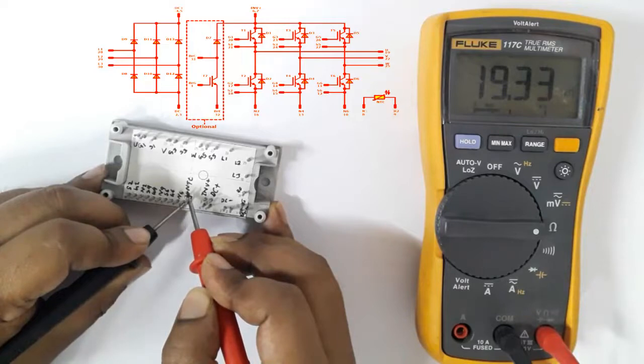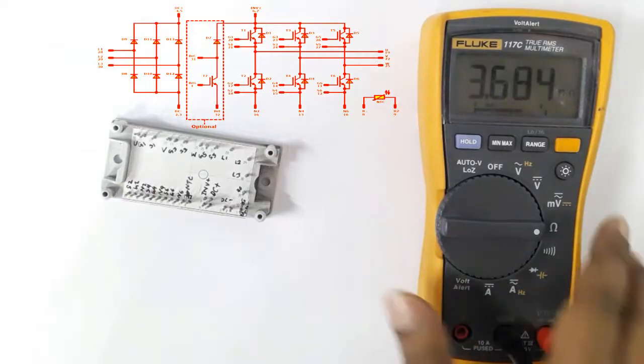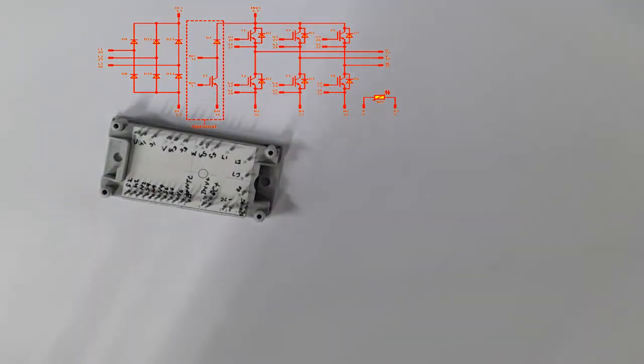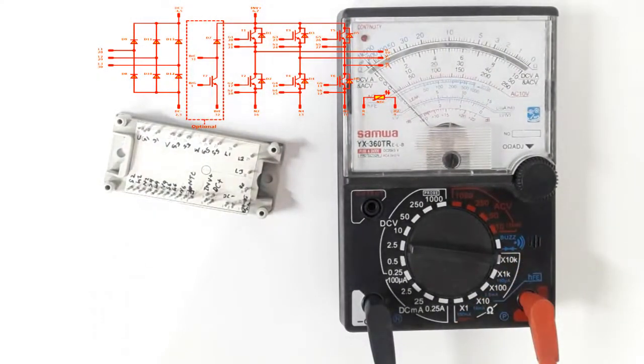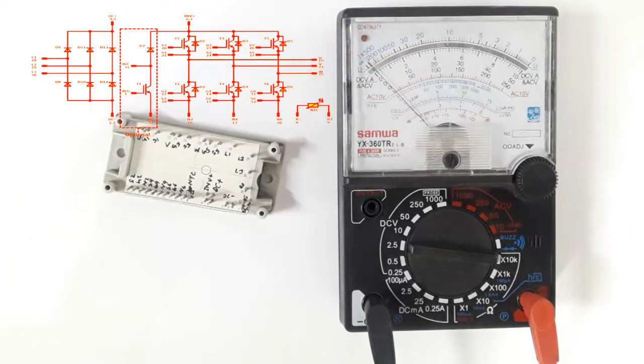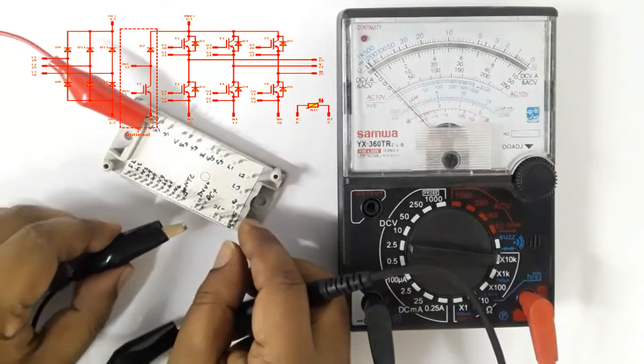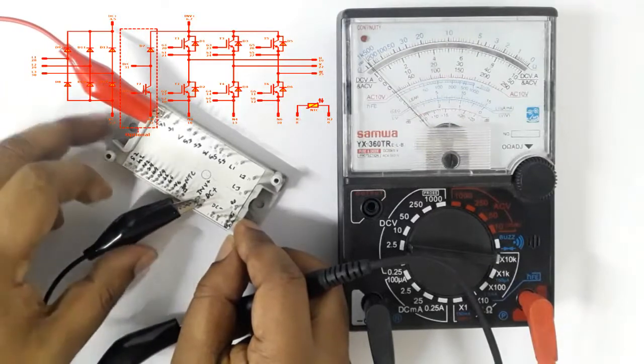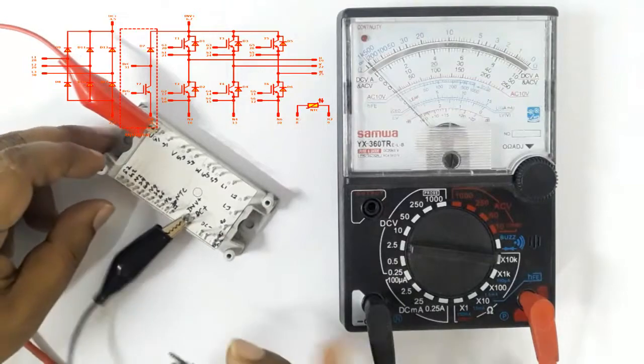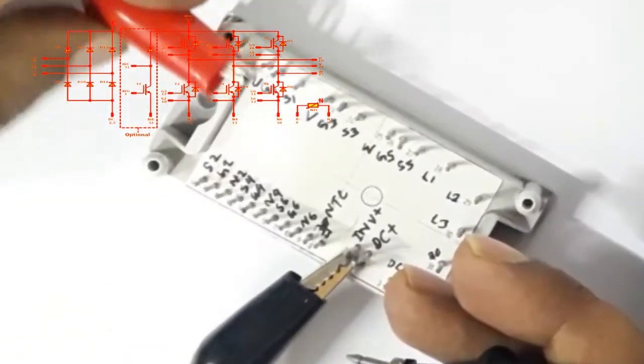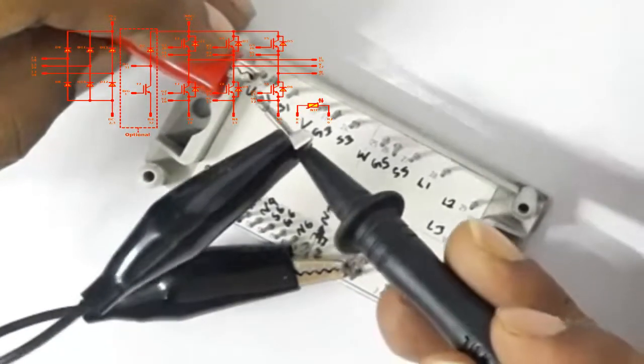Now we want to test IGBT gate. We want to test IGBT gate for U terminal first. Set black probe in IGBT inverter positive terminal and touch red probe on U, and now testing gate G1.